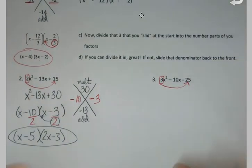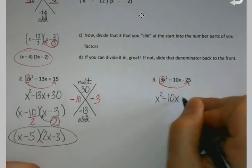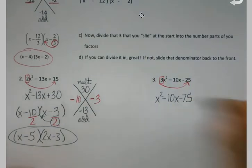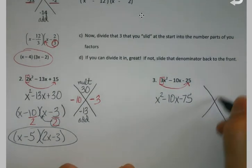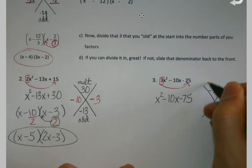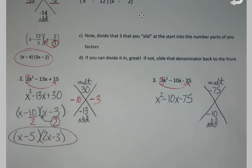Slide it down to the end. 3x² - 10x - 25. So 3 times -25 is -75. Big numbers to play with this time.